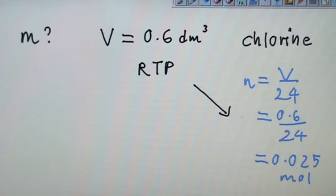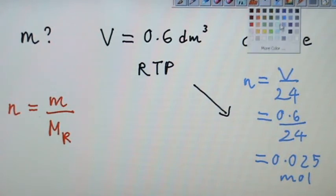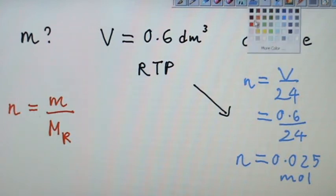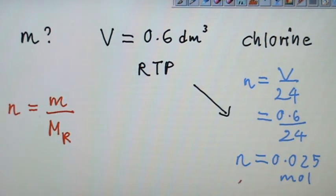Now, can you bring this information to the red side? Because number of mole can be actual mass over molar mass as well. Can I bring this piece of information, n equals 0.025 mole, can I bring it to the other side?